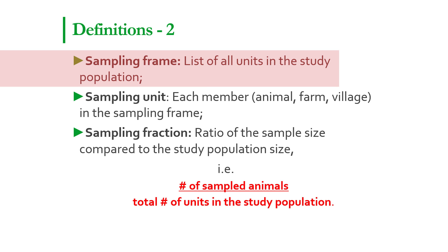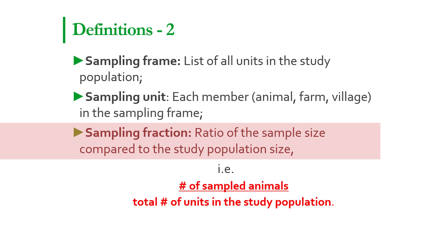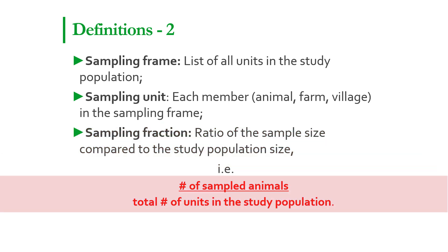Sampling frame is the list of all units in the study population — it could be individual animal, farm, village and so on. Sampling unit is each member of the sampling frame. And the sampling fraction is the ratio of the sample size to the size of the study population, or the number of sampled animals divided by the total number of units in the study population.